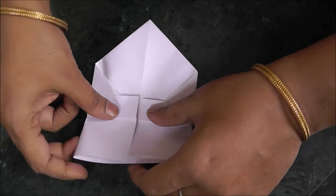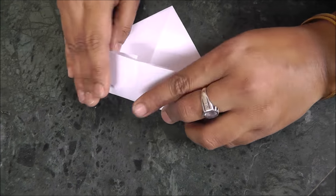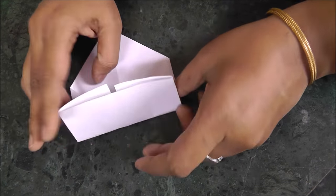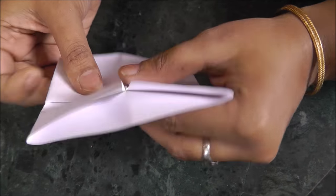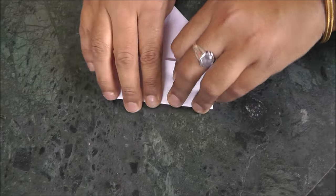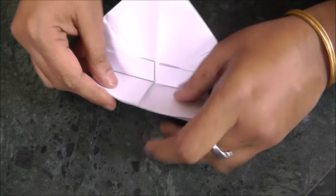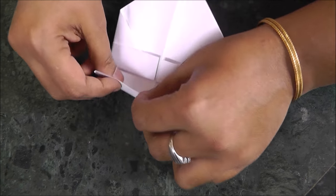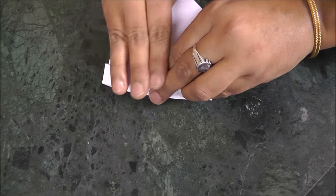Now there is a remaining portion below. Fold it backwards, the entire portion folded backwards. Fold the rectangular portion into half.